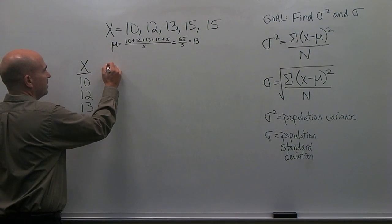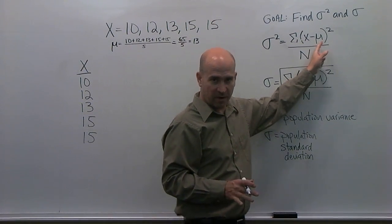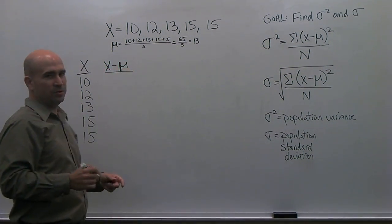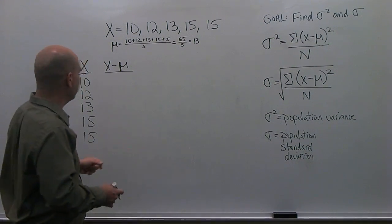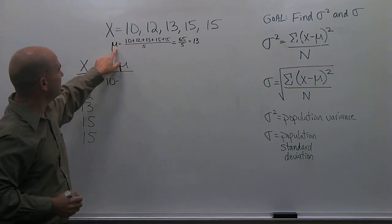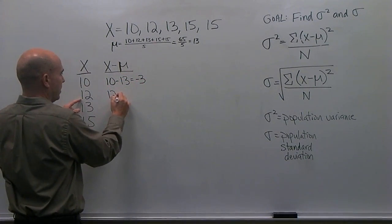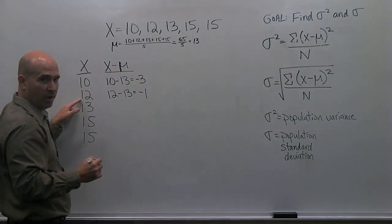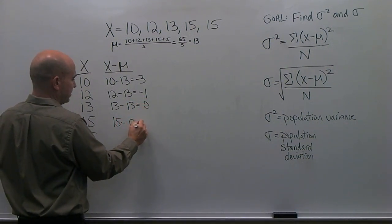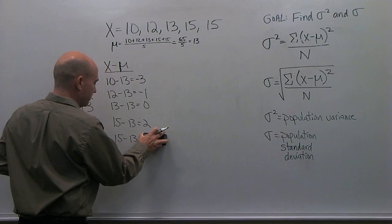And next what I want to do is solve for this piece here, x minus μ. So, I'll write a column, x minus μ. And I encourage you to do this on your own as you're watching this to make sure you can follow it. So, our first x is 10, and what's our mean? We see that the mean is 13. So, we have 10 minus 13 is negative 3. 12 minus the mean of 13 is negative 1. 13 minus 13 is 0. 15 minus 13 is positive 2. And we have that once again, 15 minus 13 is positive 2.